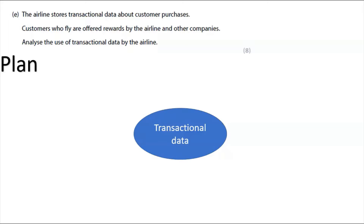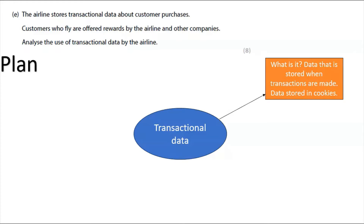I've done this in PowerPoint just to make it easier, but in your exam you'd use a spare piece of paper. Write the words you need to analyze in the center — in this case 'transactional data' — draw a circle around it, and create a spider diagram of the different things you need to include in your answer.